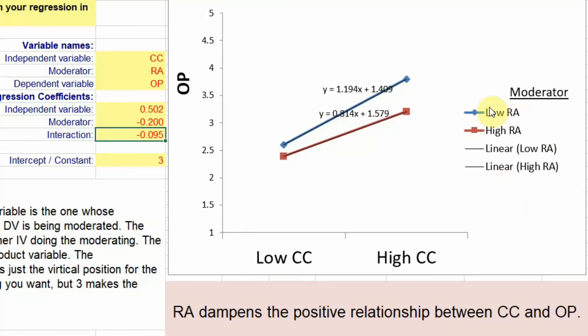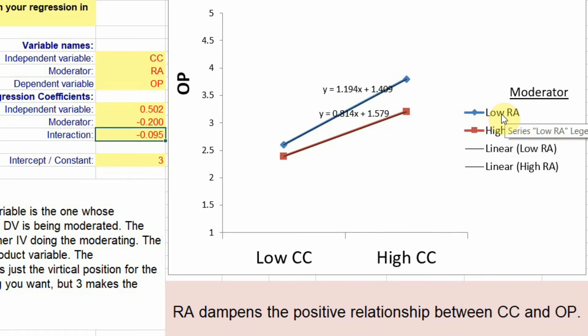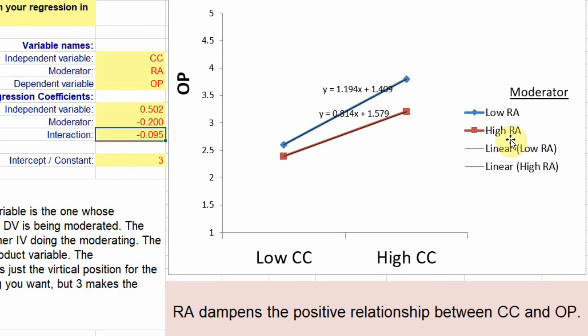Whether low RA or high RA, if there is low RA, obviously the relationship is much stronger. But as soon as you get a higher level of role ambiguity, the relationship changes.